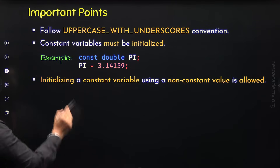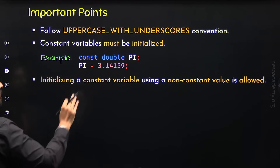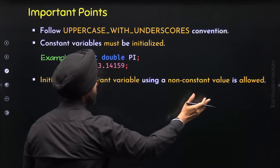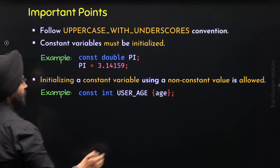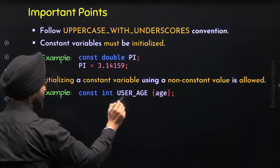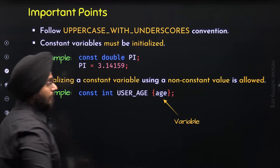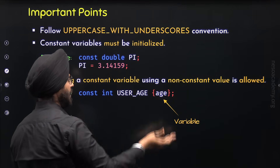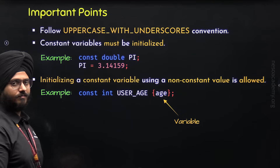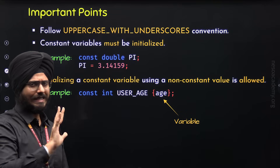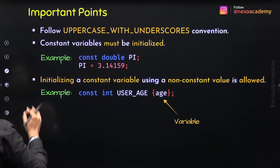Point number three is that initializing a constant variable using a non-constant value is allowed. We can initialize a constant variable with the help of a non-constant value, that is a variable. For example, here I have defined the constant variable user_age and initialized it with the variable age. That variable may receive its value from the user, and we can provide that value to the constant variable user_age. So we have learned three important points about constant variables.